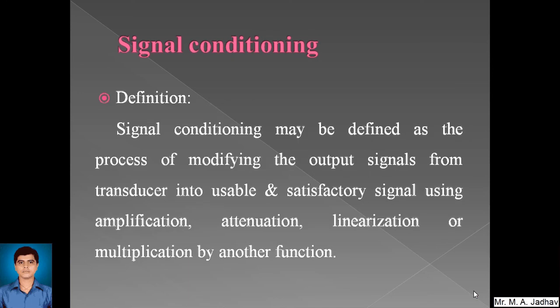Signal conditioning can be defined as the process of modifying the output signals from a transducer into a usable and satisfactory signal using amplification, attenuation, linearization, or multiplication by another function. We can modify the signal received from the transducer or sensor before sending it to the microprocessor, microcontroller, or PLC, which are basically our digital circuit architectures.